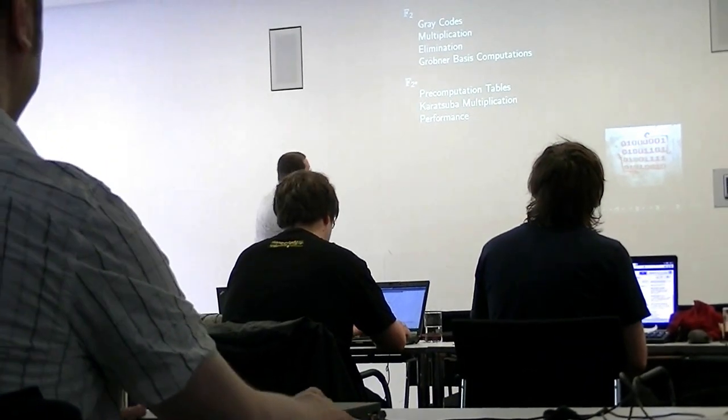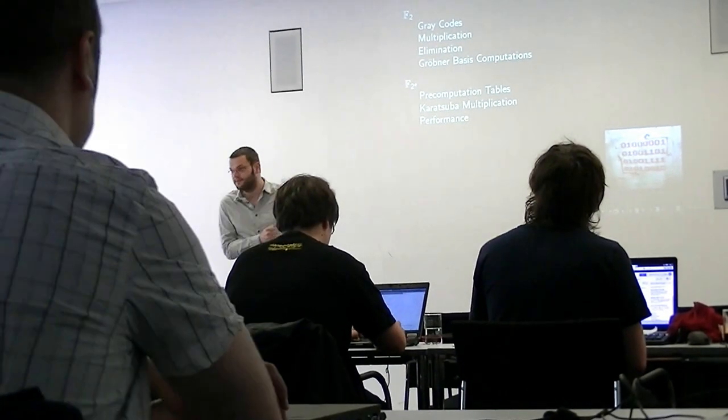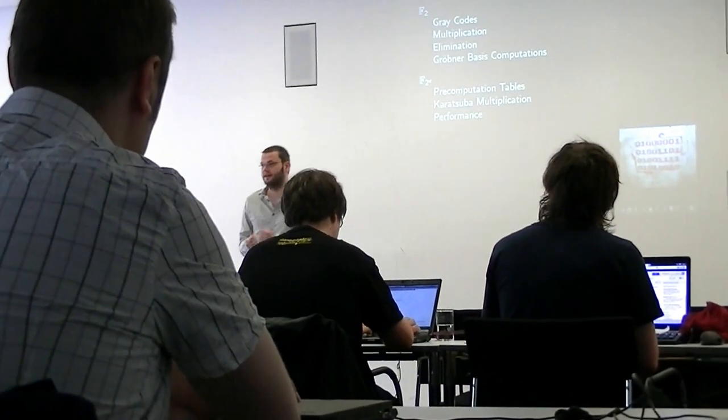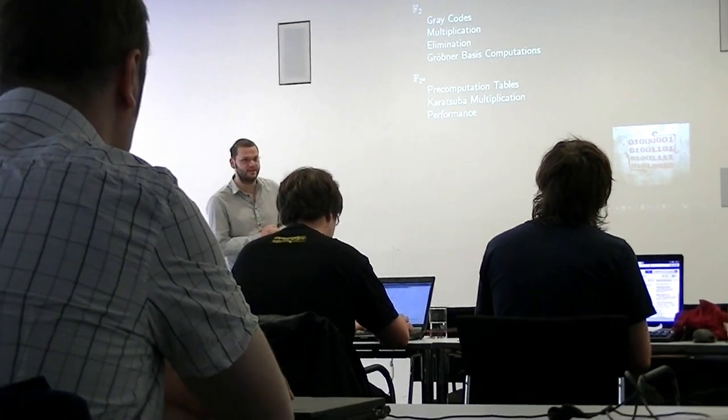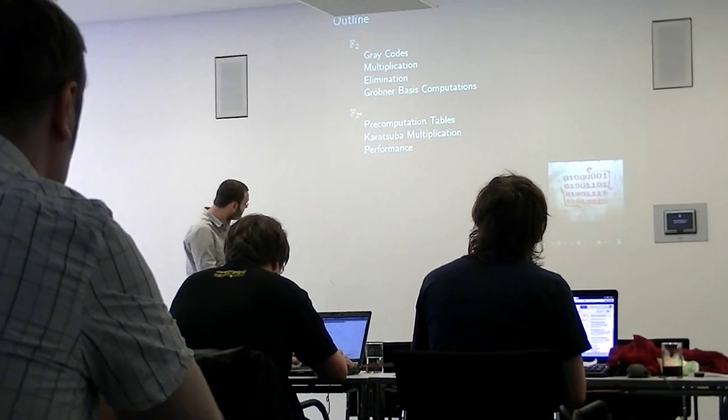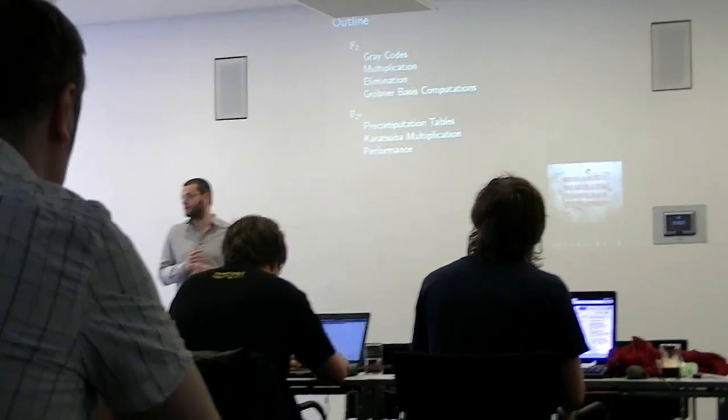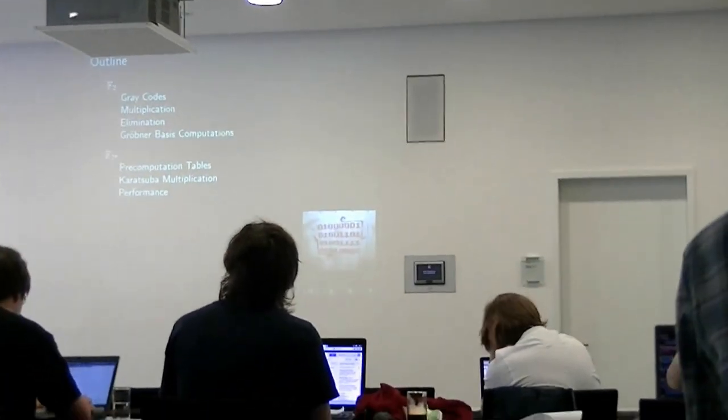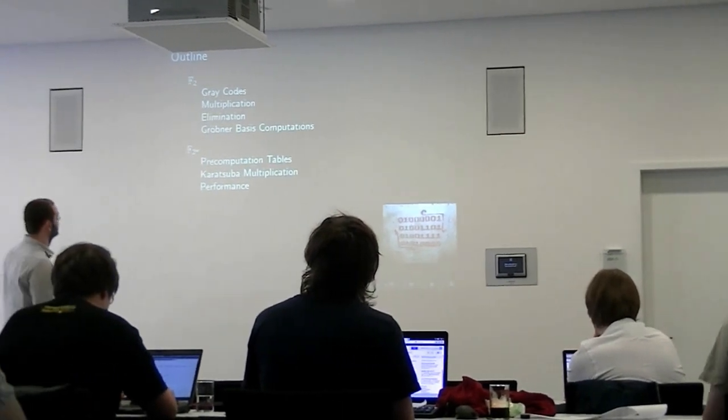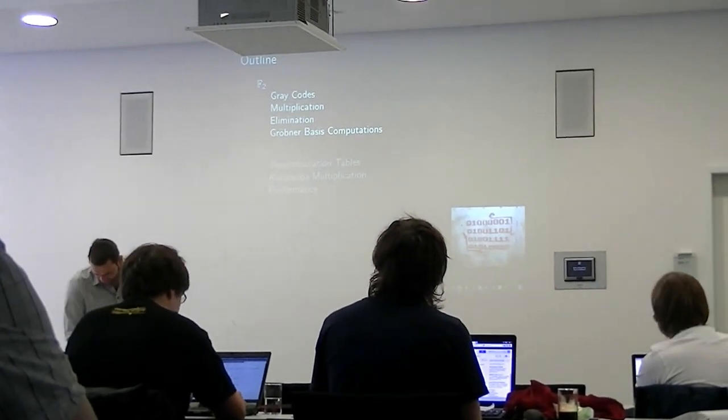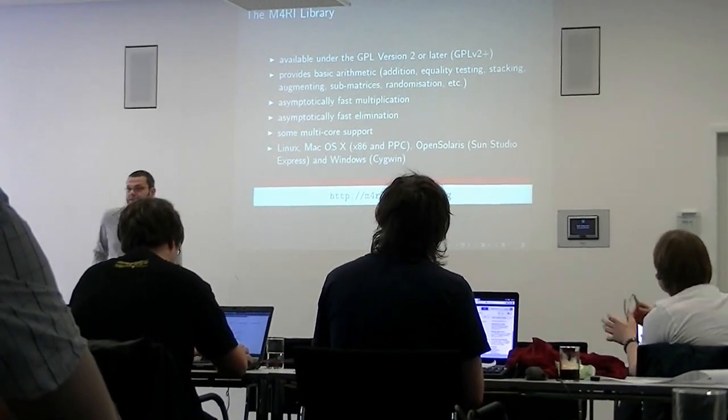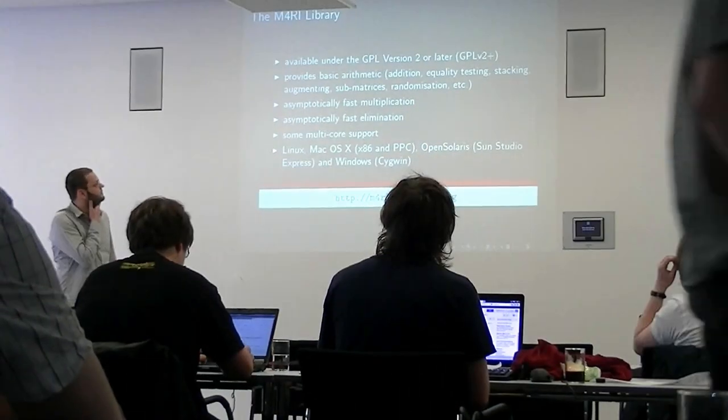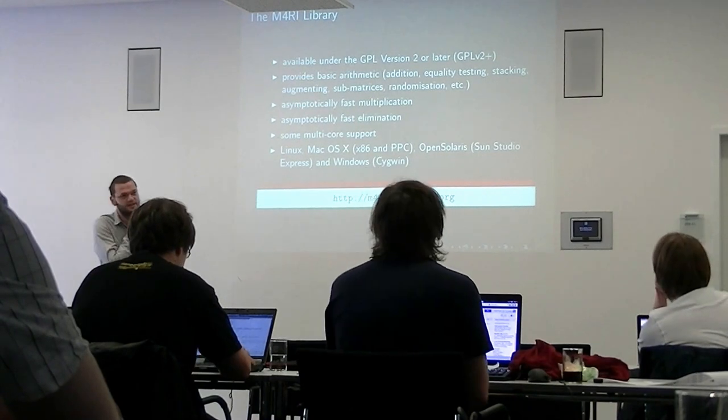Right, so the M4RI library is for linear algebra over GF2, and the M4RIE library is for linear algebra for small extensions of GF2. Hence my talk is about structure - I talk about GF2 and then about small extensions of GF2.